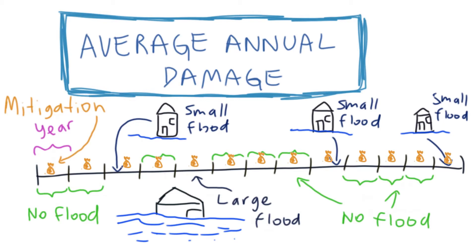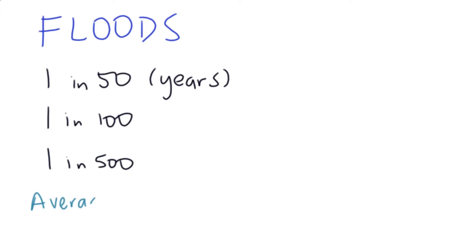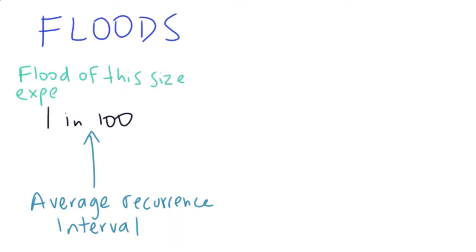The best way to understand this is through an example. Let's continue with floods. First, we need to understand the probabilities of events of different sizes occurring. Usually, we refer to flood events as a 1 in 50, 1 in 100, or a 1 in 500 event. This is just a way of talking about the probability of an event of a given size or severity occurring in a particular location. We call this the average recurrence interval, meaning how often we can expect a flood of that size to occur. A 1 in 100 flood has an average recurrence interval of 100 years, meaning that on average, a flood of that size is expected to occur every 100 years.